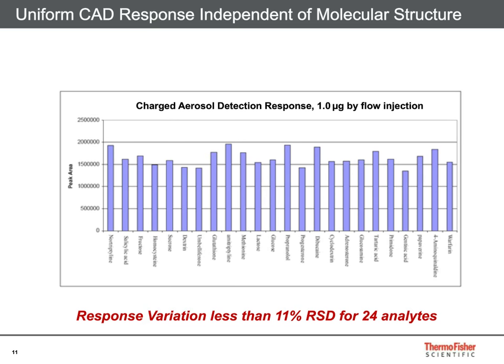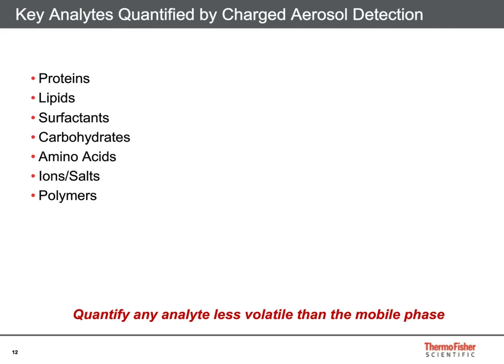Note that this experiment was performed by flow injection analysis to compare detector response independently of other factors. Analytes with vapor pressure greater than about 10⁻³ torr are generally too volatile for charged aerosol detection. Charged aerosol detection provides sensitive, quantitative measurement of many compounds including proteins, lipids, surfactants, simple sugars, complex oligosaccharides, underivatized amino acids, inorganic and organic ions, polymers, and amines. Dr. Bailey will provide example applications for many of these analytes in the second half of today's webinar.